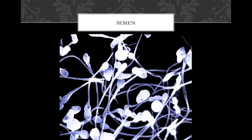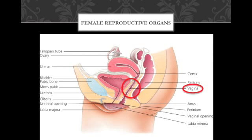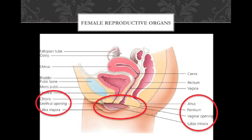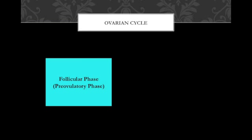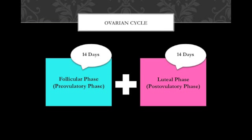The female reproductive system produces a variety of sex hormones and gametes. The female reproductive system must also be able to protect and support a developing embryo and nourish a newborn infant. Primary organs of the female reproductive system are the ovaries, the uterine tubes, the uterus, the vagina, and other external genitalia. The ovarian cycle is categorized into a follicular phase, or preovulatory phase, and a luteal phase, or postovulatory phase, each lasting approximately 14 days.